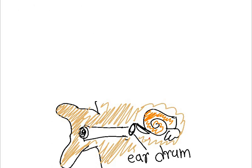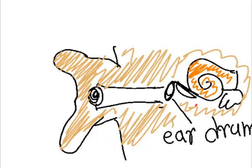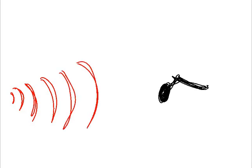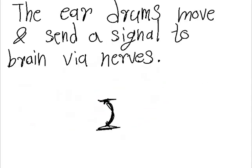This is an eardrum, and this is an ear. When the vibrations collide with it, the eardrum moves and sends a signal to the brain via nerves.